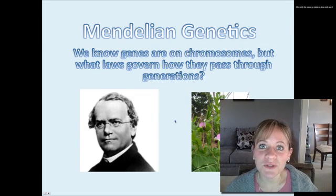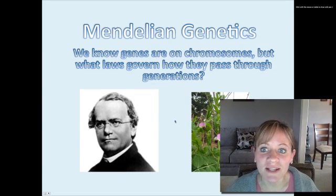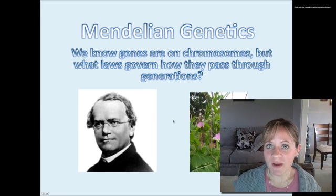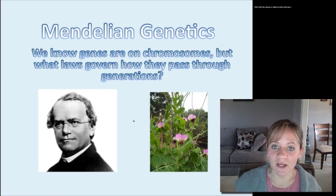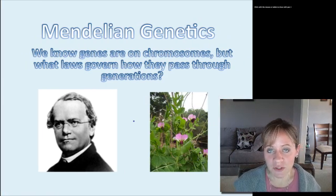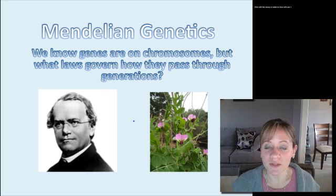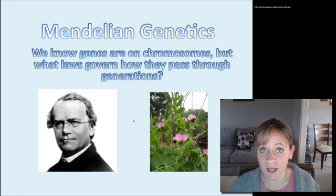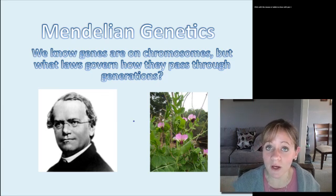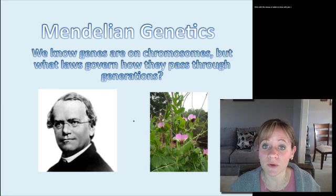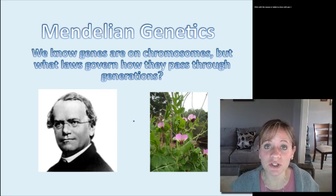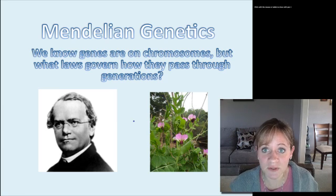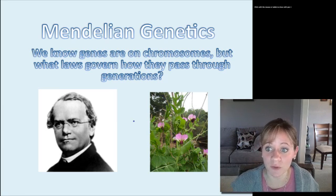Welcome to this screencast on Mendelian genetics. We've already looked at mitosis and meiosis, and especially with meiosis we looked at how within our own bodies we are combining chromosomes from our own parents in order to create our gametes. If we're male we're creating sperm, if we're female we're creating eggs. Now we need to look at how those genes are actually going to be passed on to those gametes on the chromosomes.